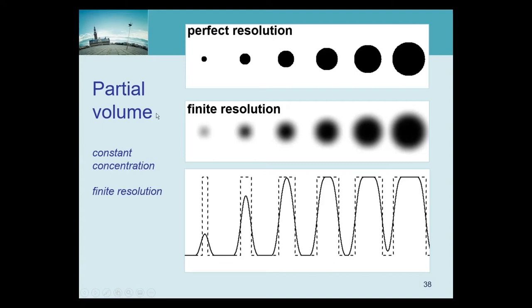Again because of partial volume effects. Now the problem is not a pixel because we made them very small. Now the problem is the point spread function on the gamma camera, so its response to a very small object. The smallest thing it can see is a blob, and when that blob is large compared to what we want to see, then we can say that the object we want to see does not fill the entire blob.